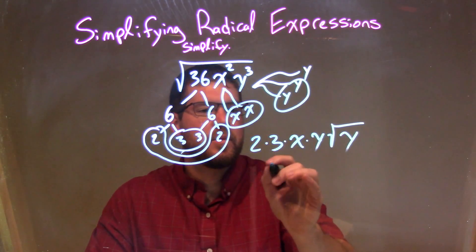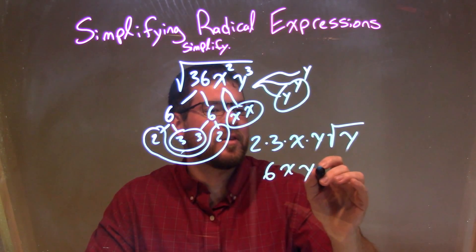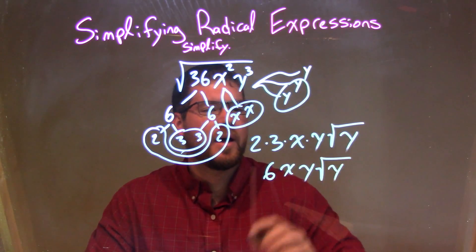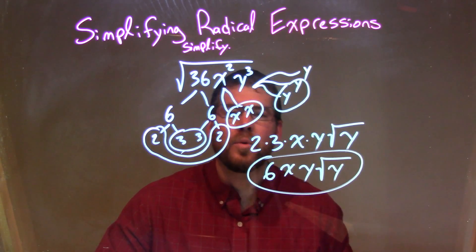Now we just simplify. 2 times 3 is 6, x times y is xy, and the square root of y right there. And that, folks, is my final answer, 6xy square root of y.